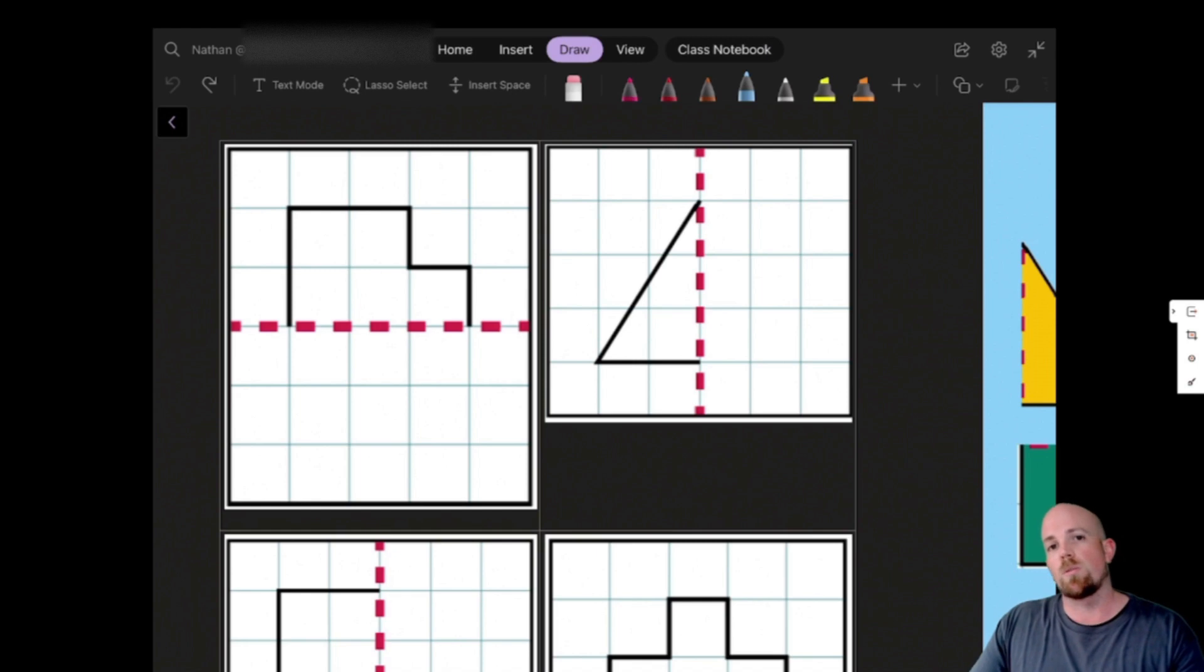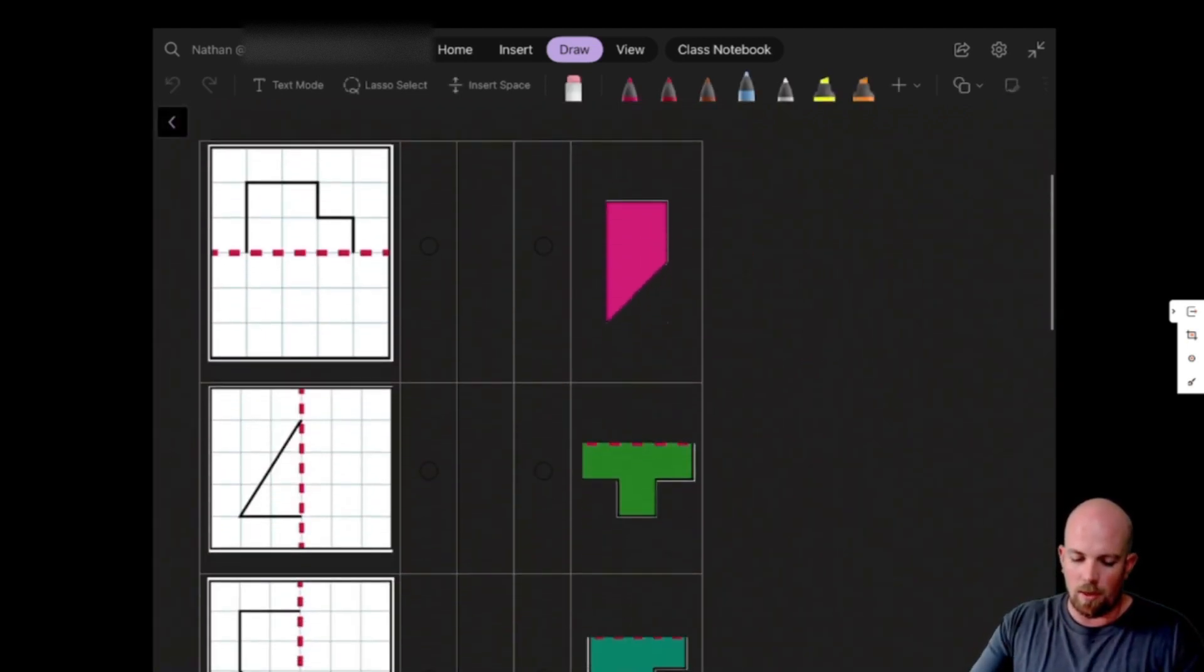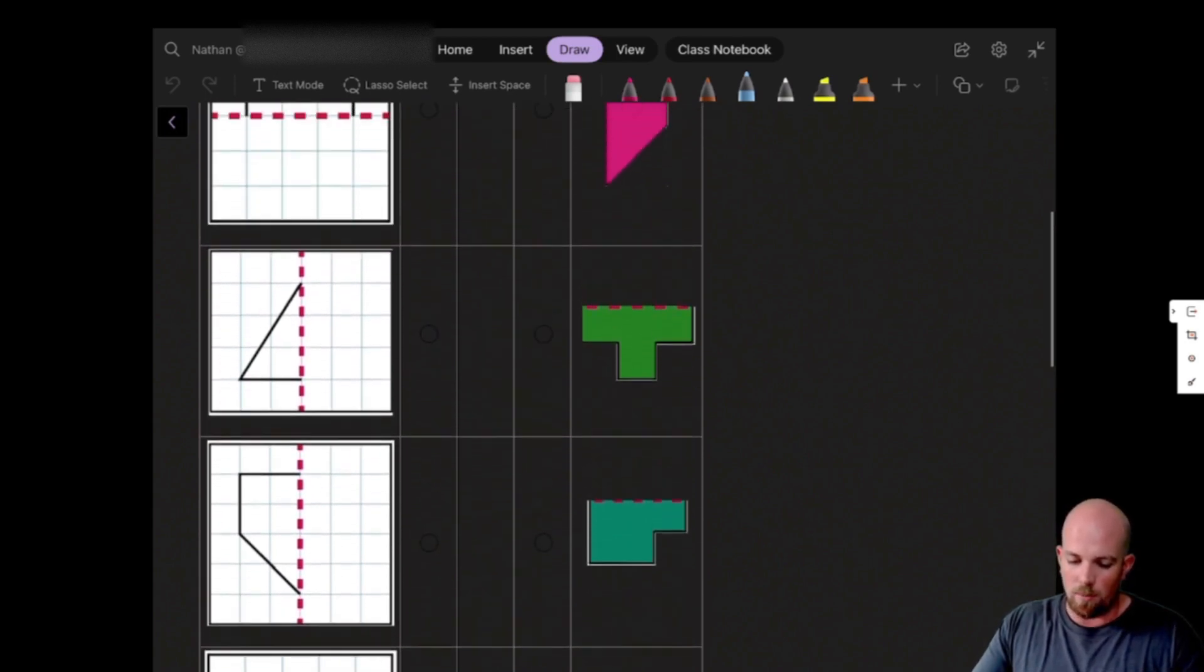My next tip would be to actively ensure that you place in OneNote activities that get students using their stylus, and where the stylus will be a more accurate representation of their work. So for example, something like here in mathematics where we want them to do a reflection. They're going to find it a lot easier to do it with a pen.